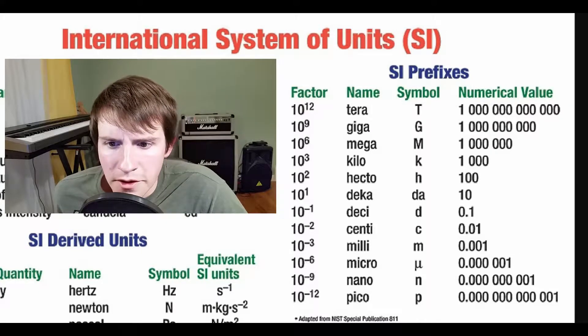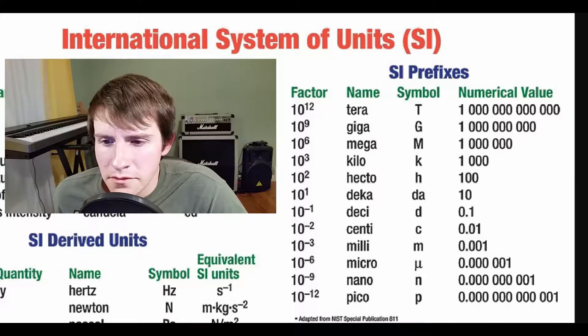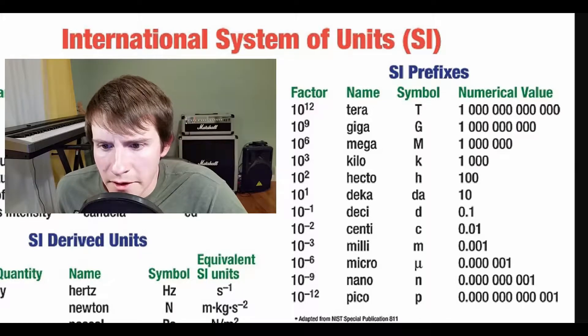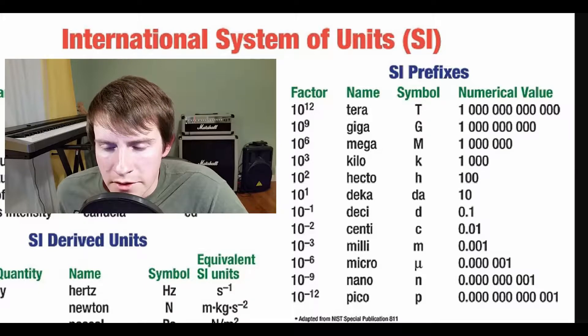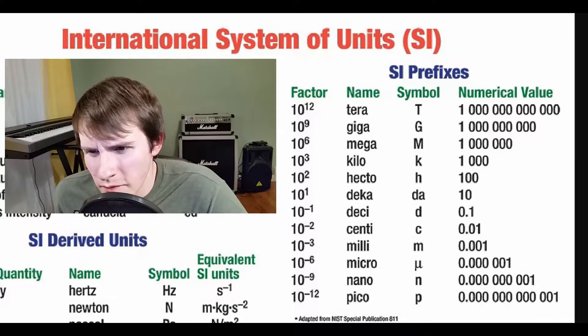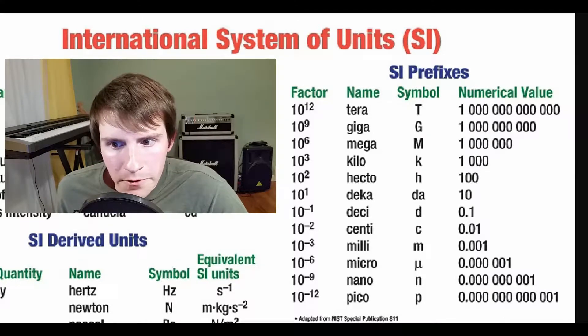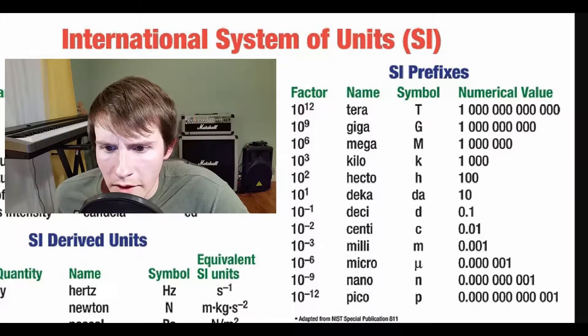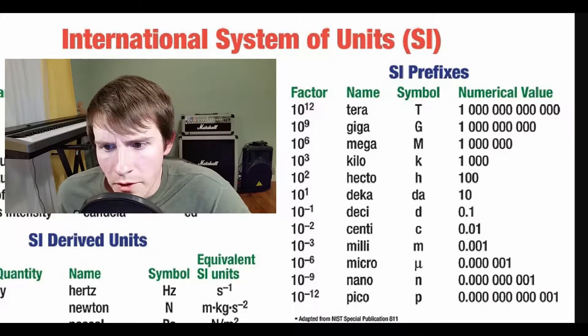Okay, so the one you'll see a lot is Milli, so 10 to the negative 3rd, or in other words, 1,000th. It's a small M prefix. 10 to the negative 6th is Micro. This funny looking M, that's actually a symbol Mu, I believe that's a Greek letter. And that means 1,000,000th, or 1 divided by 1,000,000. 10 to the 9th is even smaller Nano, and 10 to the negative 12th is Pico, and those are small N, small P.